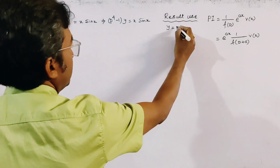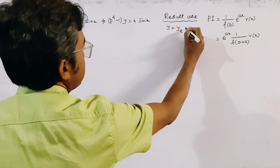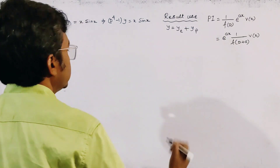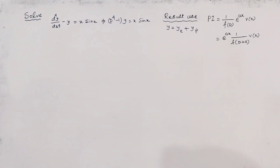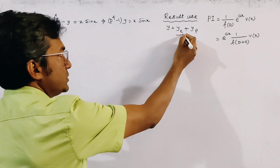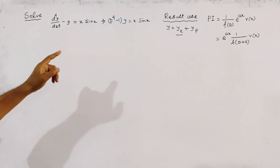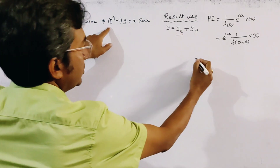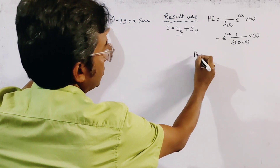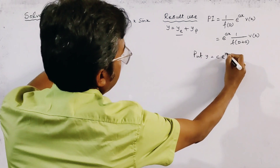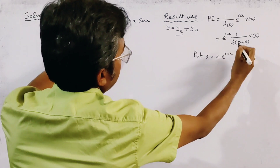The first part is the complementary function, this is yc, and the second part is the particular integral, this is yp. Now to find the complementary function yc, we first put y equal to c times e to the power mx.